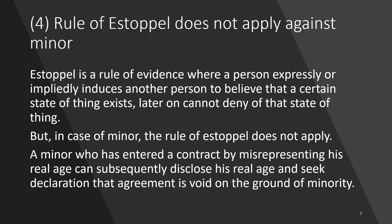The rule of estoppel does not apply against a minor. The rule of estoppel is a rule of evidence where a person who expressly or impliedly induces another person to believe that a certain state of things exists cannot later deny that state of things. For example, if I told you that the sun rises in the west, I cannot later deny that — because I am the one who told you. But in the case of a minor, even this rule does not apply.